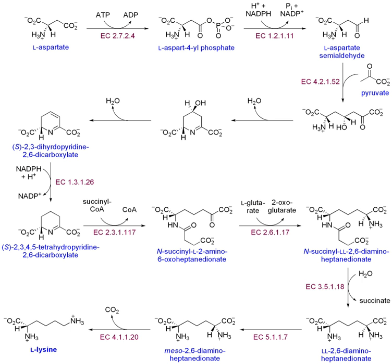However, the first step in phospholipid synthesis involves the formation of phosphatidate or diacylglycerol-3-phosphate at the endoplasmic reticulum and outer mitochondrial membrane. The pathway starts with glycerol-3-phosphate, which gets converted to lysophosphatidate via the addition of a fatty acid chain provided by acyl coenzyme A. Then, lysophosphatidate is converted to phosphatidate via the addition of another fatty acid chain contributed by a second acyl-CoA. All of these steps are catalyzed by the glycerol-phosphate acyltransferase enzyme. Phospholipid synthesis continues in the endoplasmic reticulum, and the biosynthesis pathway diverges depending on the components of the particular phospholipid.